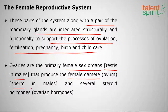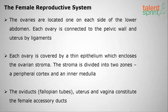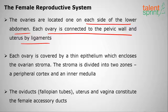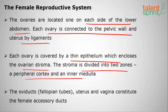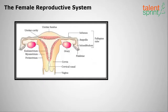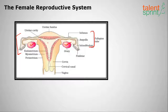The ovaries are the primary female sex organs — analogous to testes in males. They produce the female gamete, the ovum, and steroid hormones called ovarian hormones. The ovaries are located on each side of the lower abdomen and are covered by a thin epithelium enclosing the ovarian stroma, divided into peripheral cortex and inner medulla. The oviducts are also called fallopian tubes; when they are blocked, reproduction is difficult.